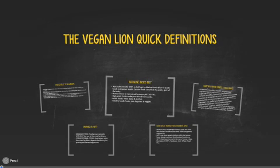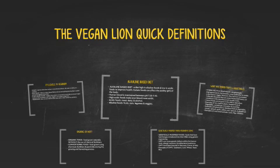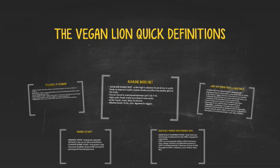Hey y'all, this is Quinn the Vegan Lion, and welcome to my video, The Vegan Lion Quick Definitions. This video will be a quick five-slide presentation breaking down the different levels of veganism, the type of diet that I am currently following which is the alkaline-based diet, the difference between hybrid and non-hybrid fruits and vegetables, the definition of organic and conventional foods, as well as understanding genetically modified foods.